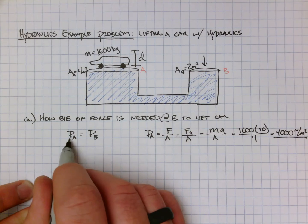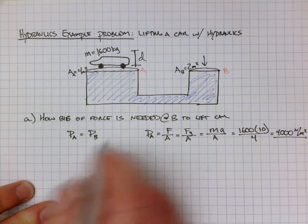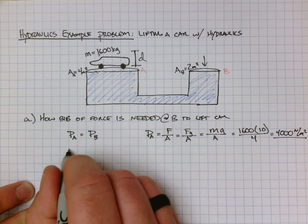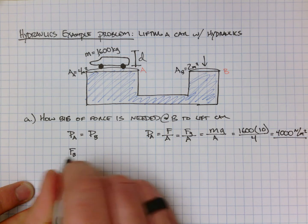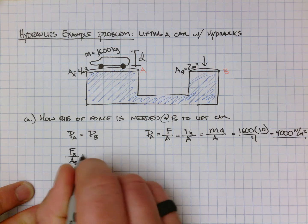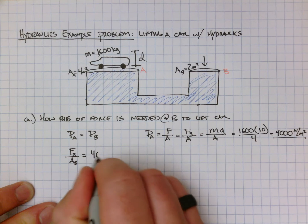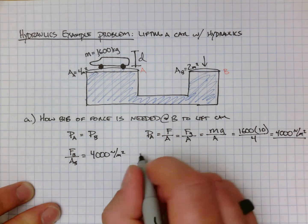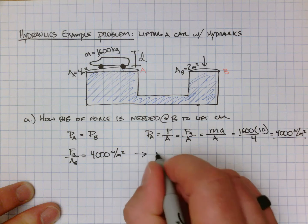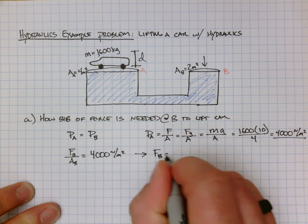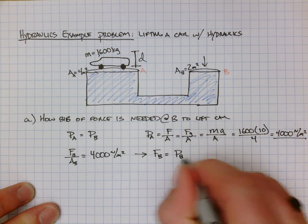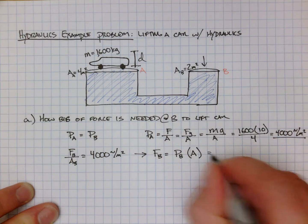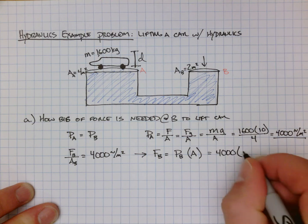Because of Pascal's principle, if the pressure at A is equal to the pressure at B, then the force at B over the area of B is also going to equal 4000 newtons per meter squared. Solving for force, that equals the pressure at B times the area, which is simply 4000 times 2.